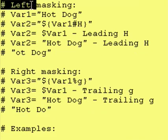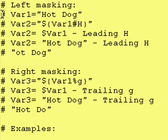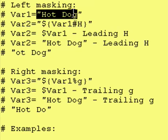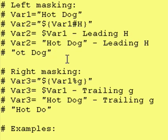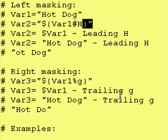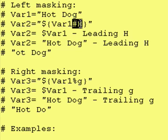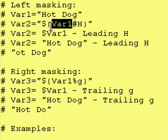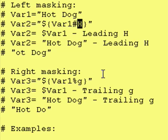Just to review left masking, here's the format. You have a variable and you assign a value to it. And then somewhere later on in your program, when you want to do left-hand masking, you do something like this. You have your variable name and you have your dollar sign, open curly brace, and close curly brace at the end. Inside of the curly braces, you have your variable name, a pound sign, and then the pattern or characters you want to try to remove. This will be removed from the left-hand side, if it exists on the left-hand side.